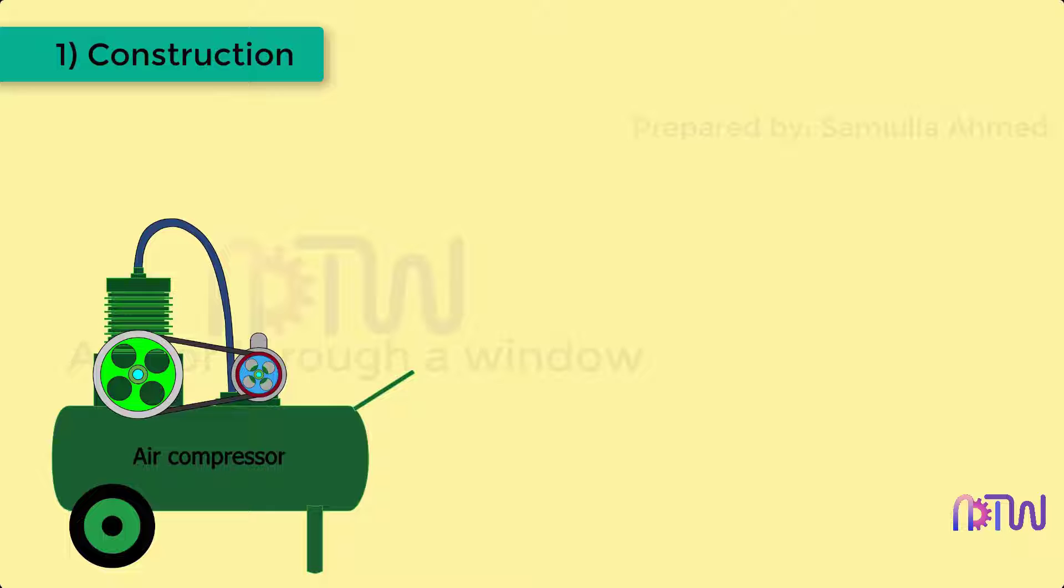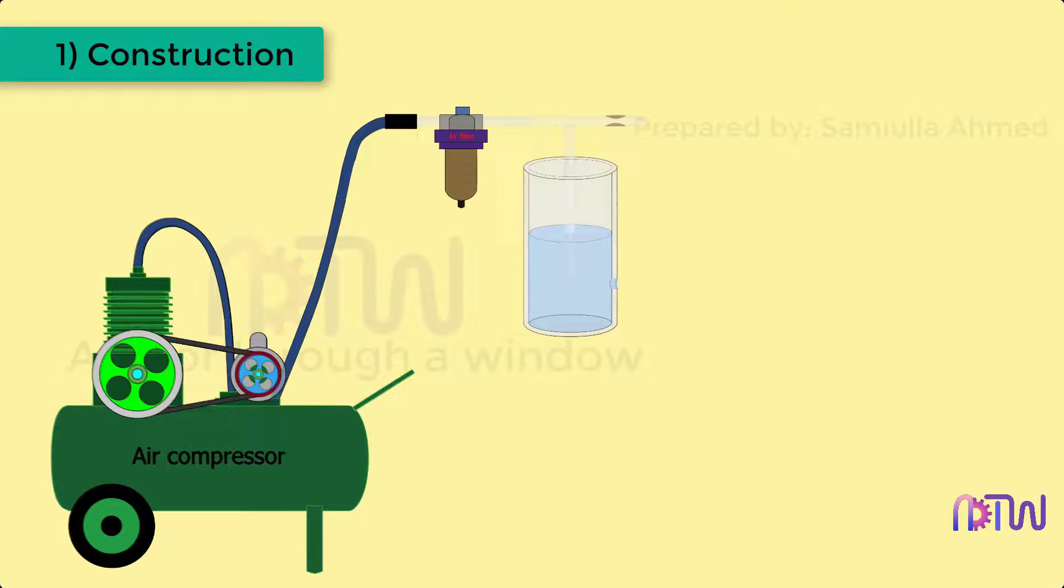Construction of the pneumatic comparator. It consists of a compressor. Compressor is the heart of a pneumatic comparator. Compressor compresses atmospheric air and stores it inside the storage tank. Filter. After the compressor, the filter is present. In this filter, all the dust particles present in the air are separated from the air and clean air passes through this filter.